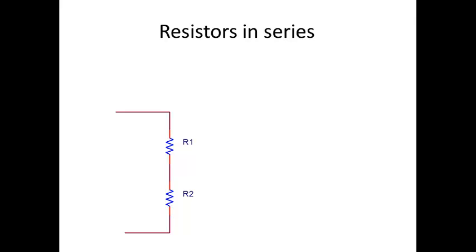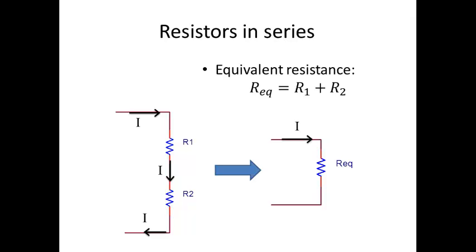Let's now consider more than one resistor — resistors in series. When we have resistors connected in series like R1 and R2 in this diagram, the same current flowing through R1 is the same current flowing through R2, and the same current going back to the rest of the circuit. We can simplify the circuit by computing an equivalent resistance. When resistors are connected in series, the equivalent resistance is just the summation of the values, so we replace the two resistors with one, and the same current I flows in the equivalent circuit.